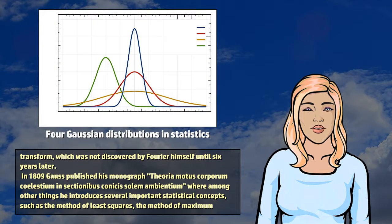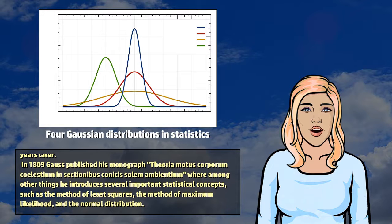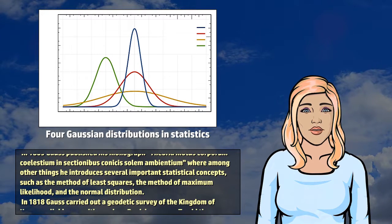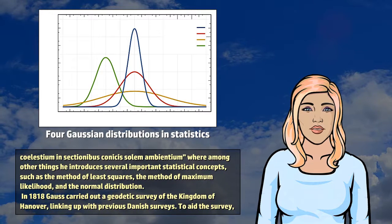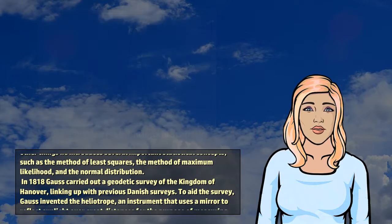In 1809 Gauss published his monograph Theoria Motus Corporum Coelestium where among other things he introduces several important statistical concepts, such as the method of least squares, the method of maximum likelihood, and the normal distribution.